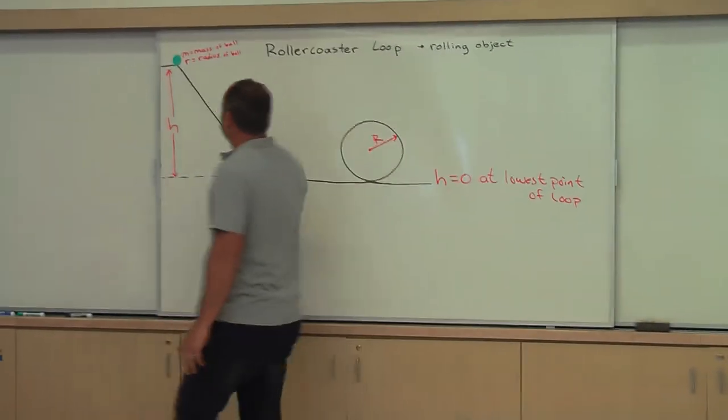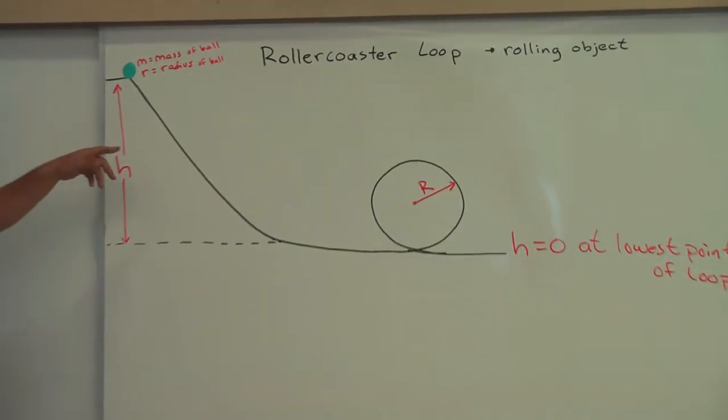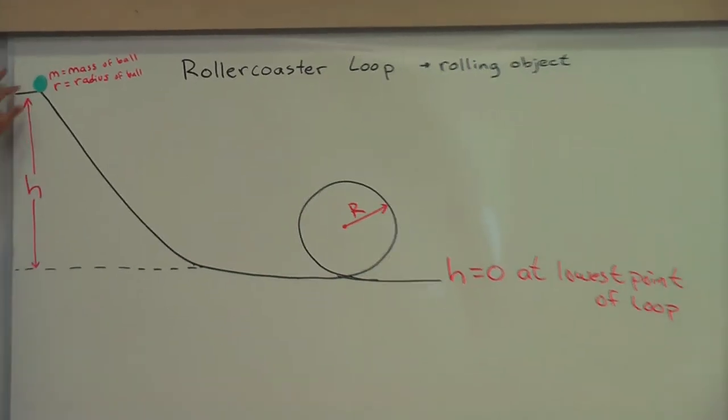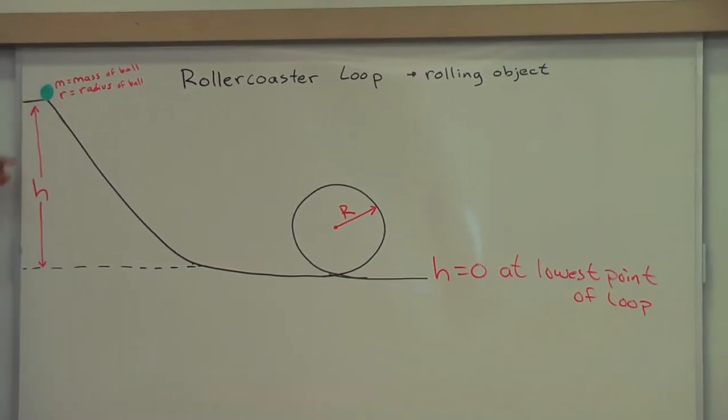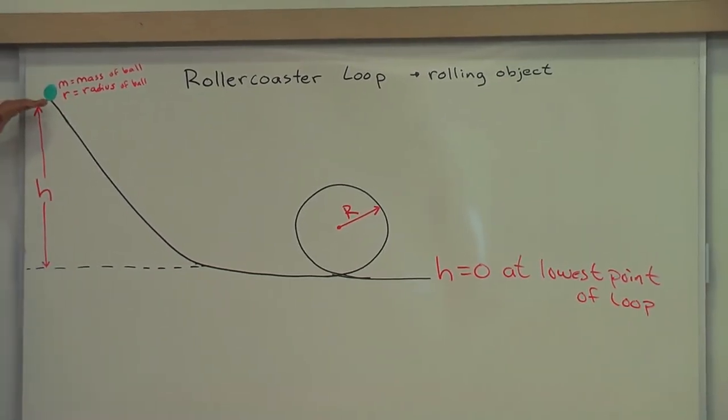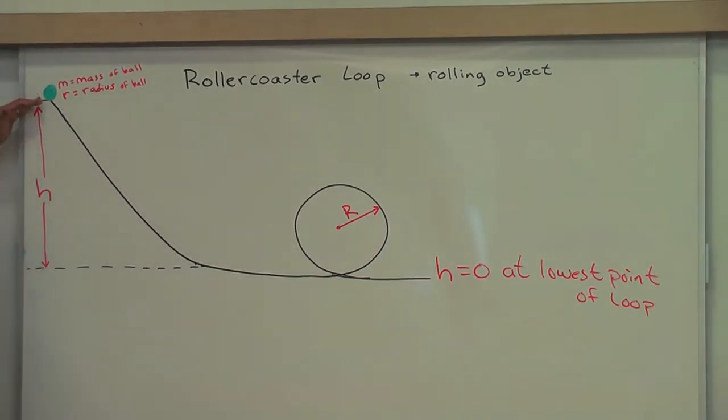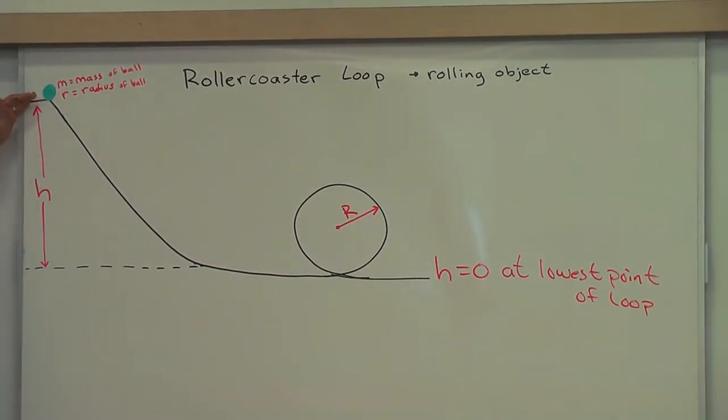So here's a diagram of the situation, and here's the ball with some mass M and some size with radius r, and we'll start it at some height h above the lowest point of the loop, and that's the height that we want to find.